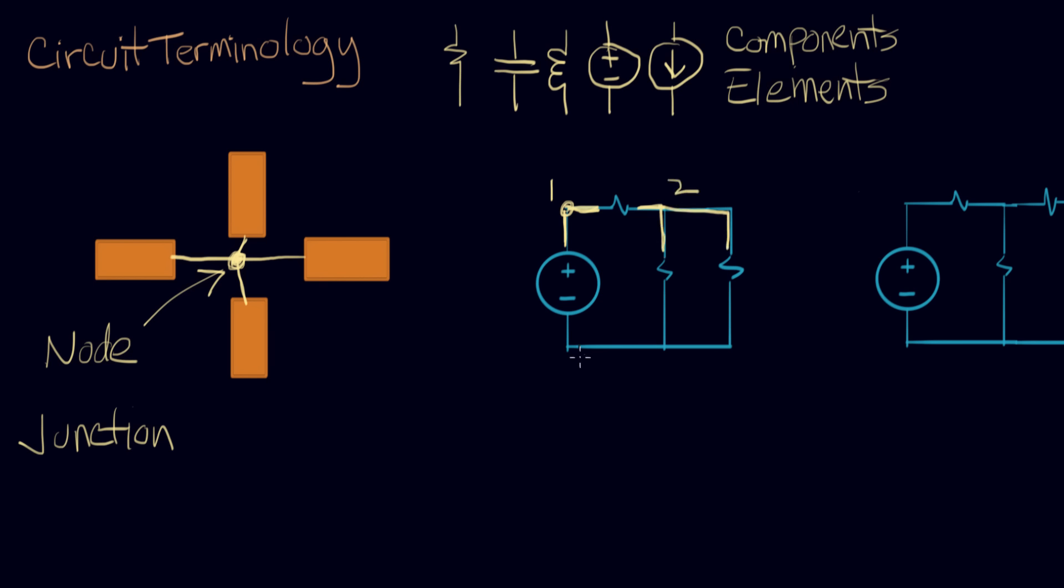And down below, same sort of thing. I see an ideal wire connecting the resistors and the source, so I can color that in, and that's node number three. So this circuit has three nodes.